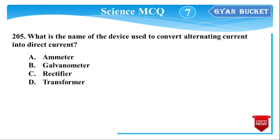Next question: What is the name of the device used to convert alternating current (AC) into direct current (DC)? The answer is a rectifier — option number C.